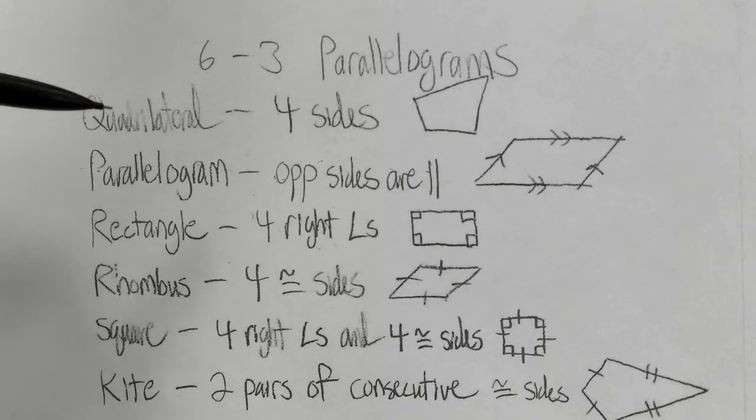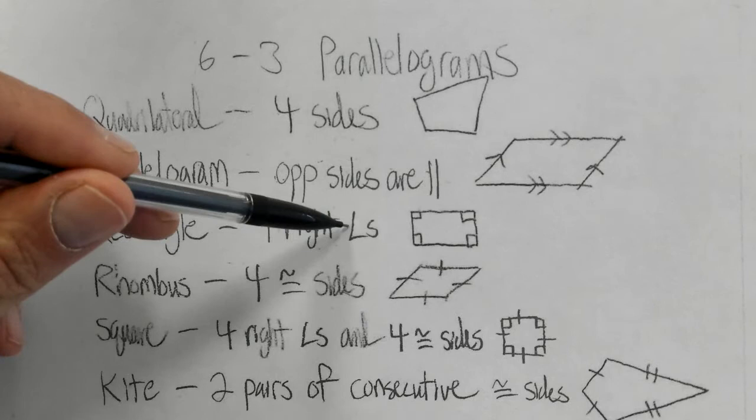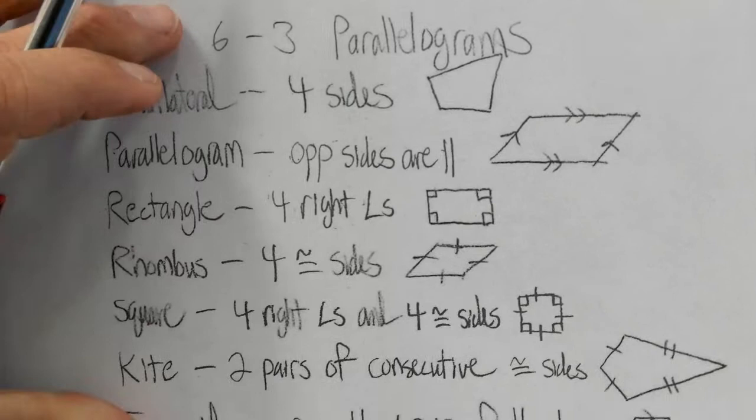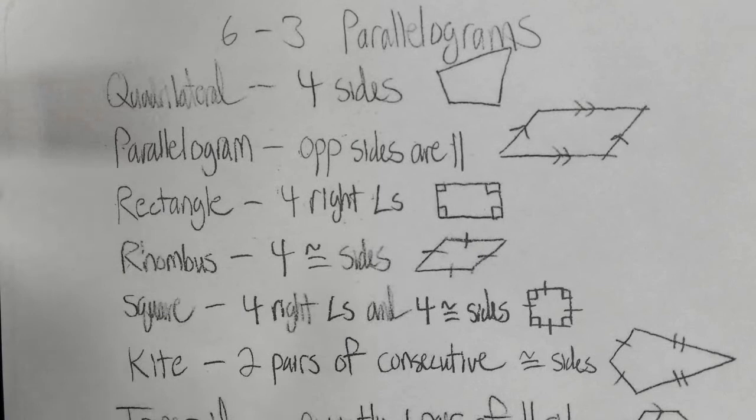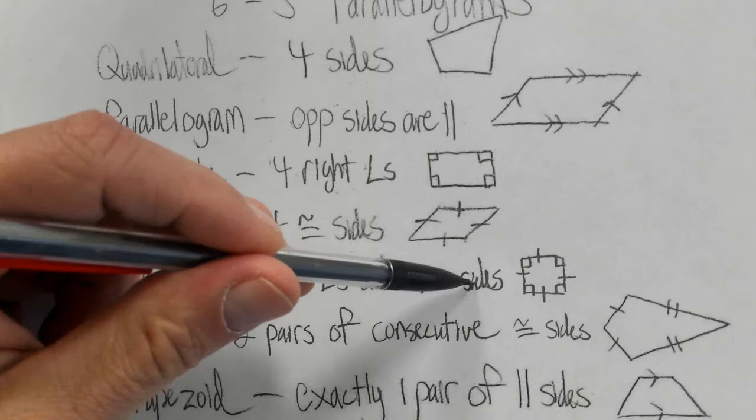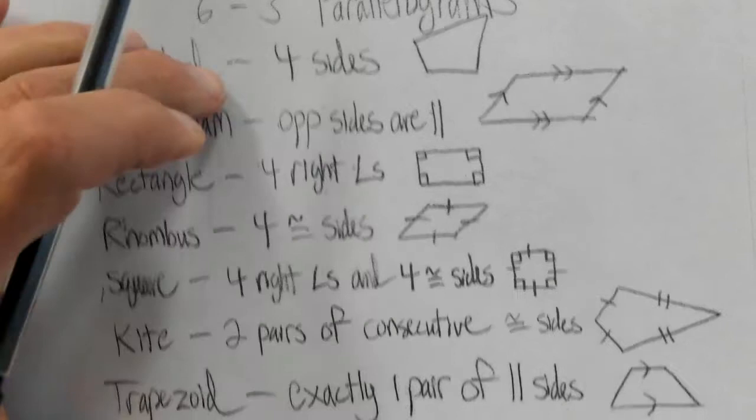The next one is a rectangle. To be a rectangle, it has to have four right angles — it must have four right angles in order to be a rectangle. Next we have a rhombus. In order to be a rhombus, it has to have four congruent sides; all four sides have to be the same length. We have a square next. In order to be a square, it has to have four right angles and four congruent sides — that's what makes a square.